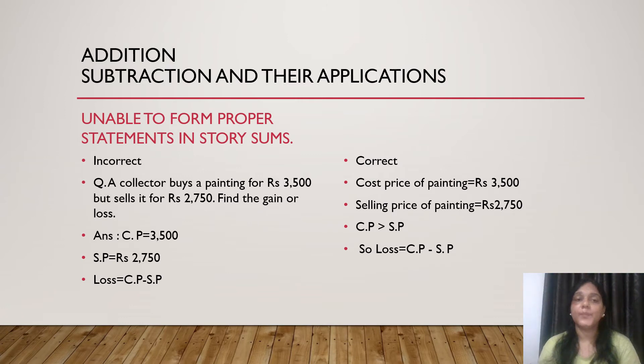Another topic of addition and subtraction chapter is statement problems. Students are unable to form proper statements in story sums. For an example a collector buys a painting for Rs. 3500 but sells it for Rs. 2750, find gain or loss. Students simply write CP equals to 3500, SP equals to 2750, then loss equals to CP minus SP. They should write with proper statement.